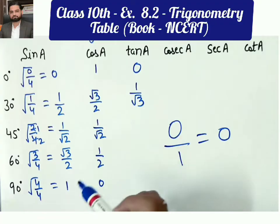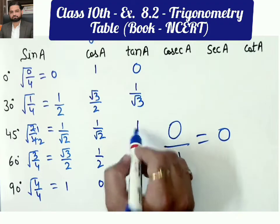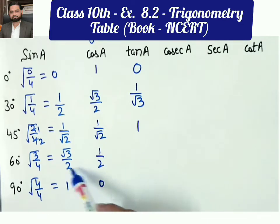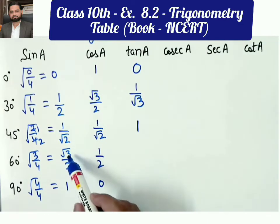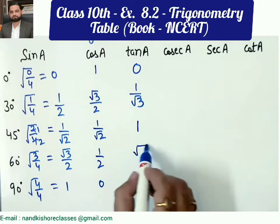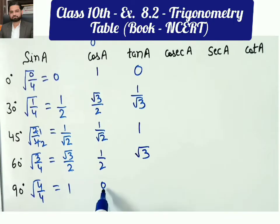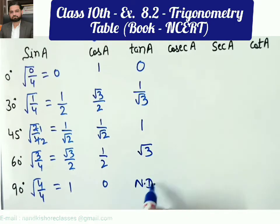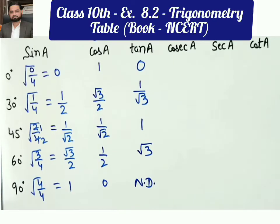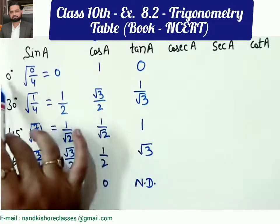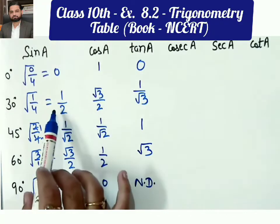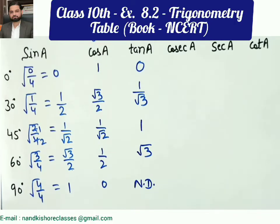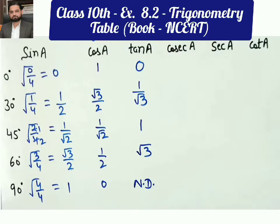For tangent 45°: 1/√2 divided by 1/√2 — both values are the same, so they cancel — giving 1. For tangent 60°: √3/2 divided by 1/2 — denominators cancel, numerators give √3/1 = √3. For tangent 90°: it is 1/0, and 0 in the denominator is not defined, so tangent 90° = not defined (ND).